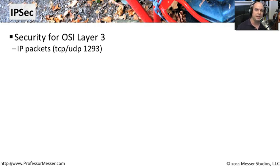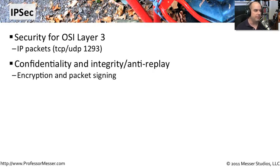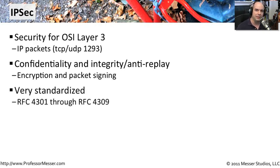For situations like that, we have another type of encryption mechanism called IPsec. This is a type of security that was built specifically for TCP/IP, and it's designed to work at layer three, to work with IP packets. This IPsec mechanism allows us to have confidentiality and integrity in communication between devices or hosts on both sides. There is built-in encryption into IPsec, and the ability to sign every packet so we can be assured it is exactly the same packet that was sent. You will see this on routers, firewalls, and clients. It's found in RFC 4301 through RFC 4309.